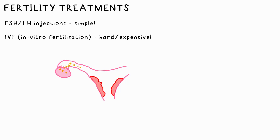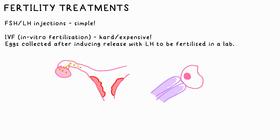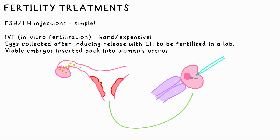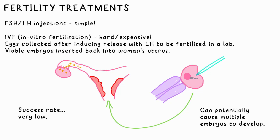Some couples, however, would love to have children but can't due to infertility. Sometimes it's something fairly simple, like not enough FSH or LH being produced, which injections can fix. The most expensive solution to bigger issues is IVF — in vitro fertilization. Eggs are harvested from the woman after inducing their release, and will then be fertilized in the lab with the prospective father's sperm. Any embryos that develop are inserted back into the uterus, where they will hopefully embed in the lining and grow normally. Sadly the success rate is very low, and there's also the risk that more than one baby could be born.